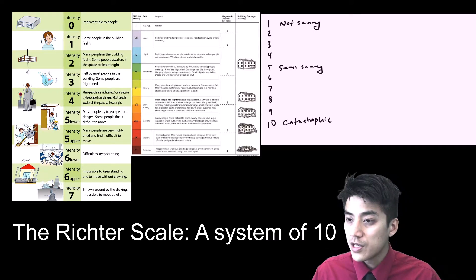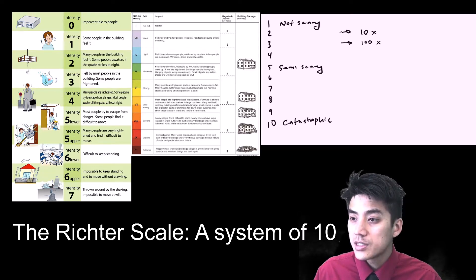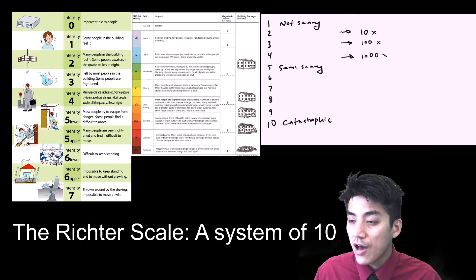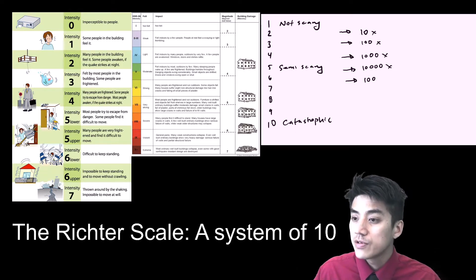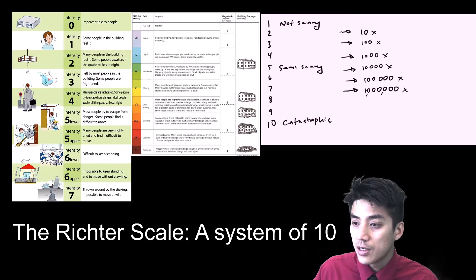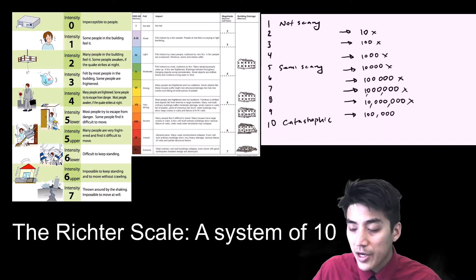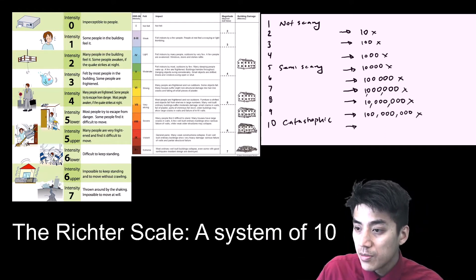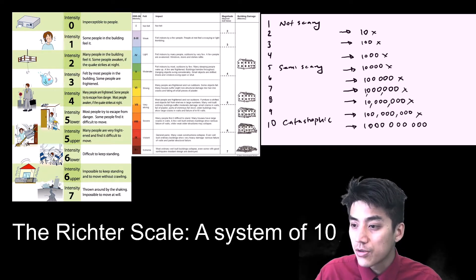So the Richter scale is a system of 10, which means every step represents a tenfold increase. So a 2 is 10 times stronger than a 1.0, a 3 is 100 times stronger than a 1.0, a 4 is a 1,000 times stronger than a 1.0 magnitude earthquake, a 5 is 10,000 times. So again, every step, just add another 0, it represents a tenfold increase. When you get to a 7, a 7 is now 1 million times stronger compared to a 1.0, an 8 is 10 million, and a 9 would be 100 million times stronger. So by the time you get to 10, it's catastrophic, because this earthquake is 1 billion times stronger compared to a 1.0 magnitude earthquake.